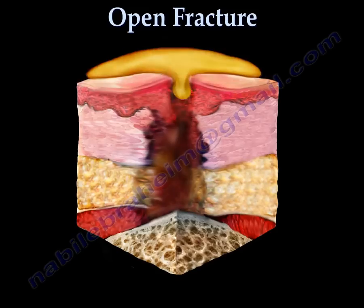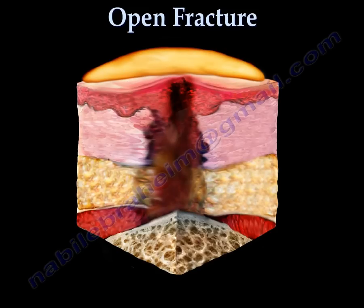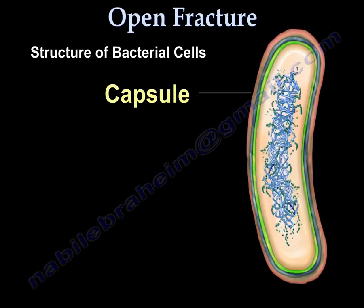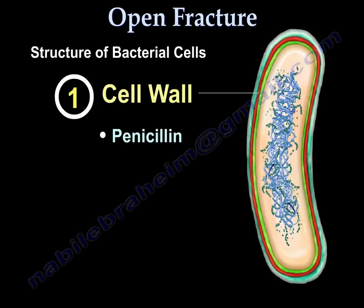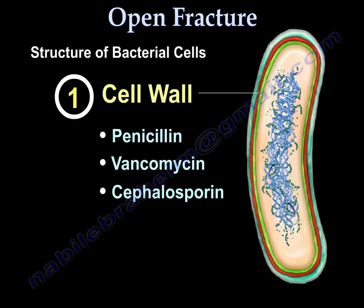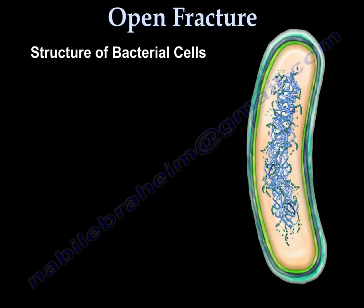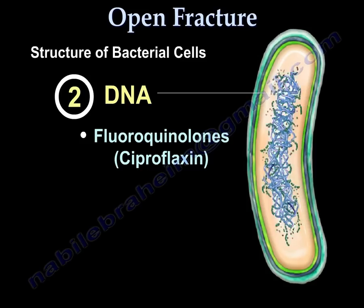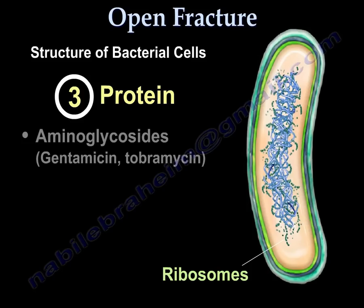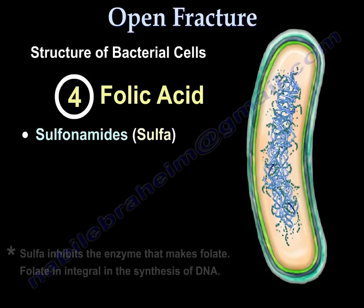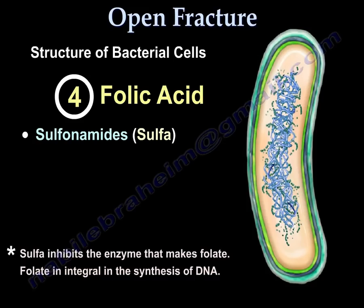The abscess must be drained and evacuated, followed by antibiotic treatment. Antibiotics can kill bacteria in several different ways. One way is by disrupting the cell wall, which ruptures the bacteria. Another way is by preventing DNA replication by blocking the unwinding of the DNA. A third way is by inhibiting the ribosomes from making proteins needed for cellular structure and function. The last way is by blocking the enzymes that produce folate. Folate is needed for DNA synthesis, and without it the cell will die.